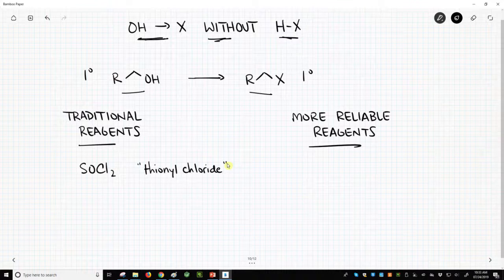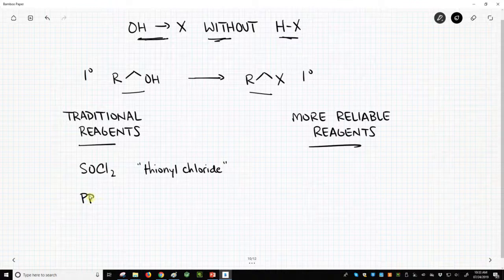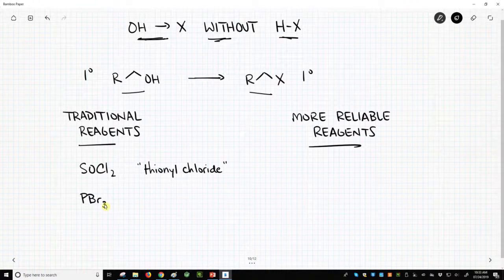And that will convert your alcohol into a chloride. There's another reagent for bromides, phosphorous tribromide. I think most people would just say PBr3.